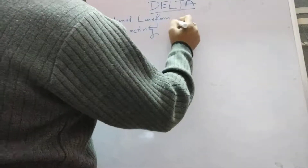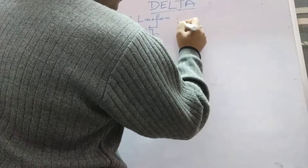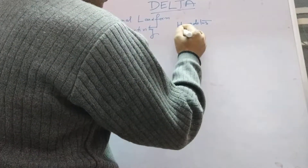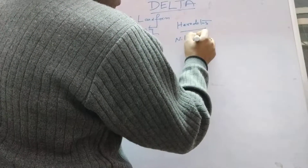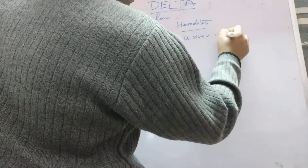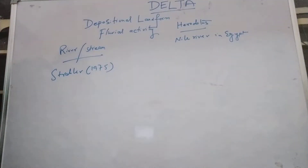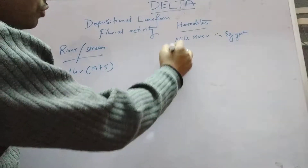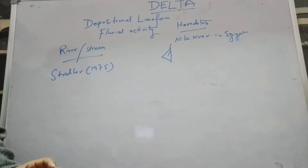Delta was first introduced by the famous Greek historian Herodotus, by studying the Nile river in Egypt. He applied this term after observing the triangular depositional features of the Nile river in Egypt.